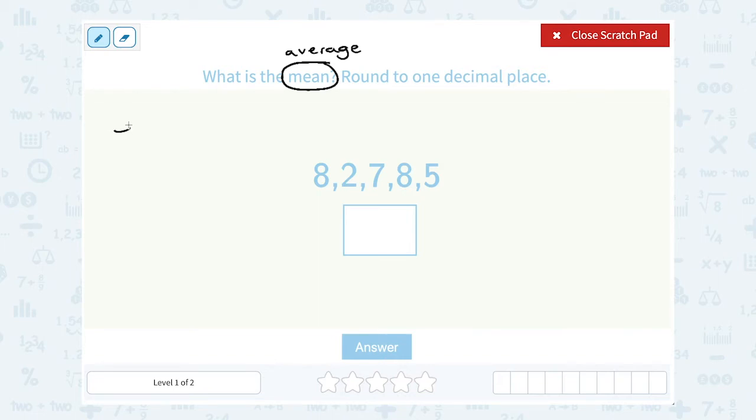So I would say 8 plus 2 plus 7 plus 8 plus 5. And then once I add them all up and see what I get for my answer, I'm going to divide by how many numbers there were. So you have to count 1, 2, 3, 4, 5. If there were 5 numbers, I would have to divide that answer by 5 to get the mean or the average.